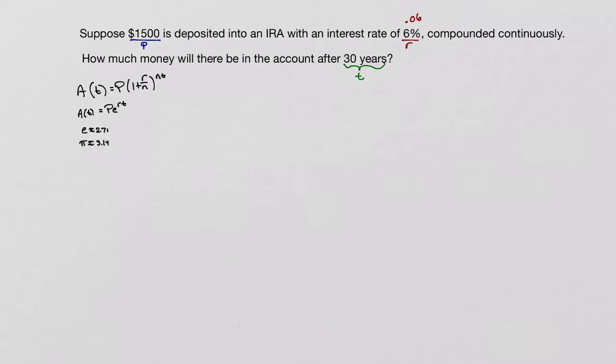So we're going to set it up as A(t) equals my principal amount, which is $1,500, times e, which is the number of Euler's constant, about 2.71, to the power of my rate, 0.06, times my time, which is 30 years.